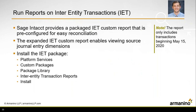Another reporting enhancement is the ability to run reports on inter-entity transactions. Sage Intact now provides a packaged IET inter-entity transaction custom report that's pre-configured for easier reconciliation. You can use the report package as a starting point for all reconciliation and reporting related to inter-entity transactions. The new custom report enables viewing source journal entry dimensions. Note that the report only includes transactions beginning on May 15, 2020, so anything before that date will not appear in these reports.